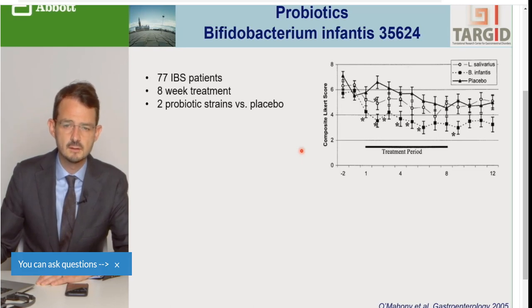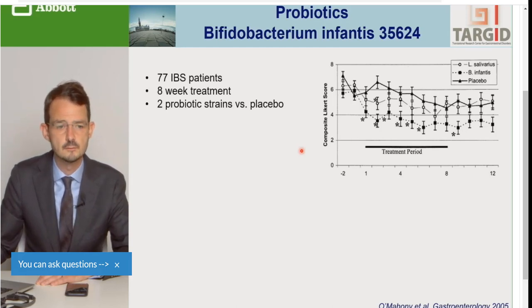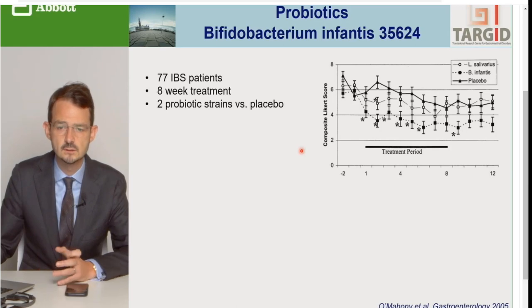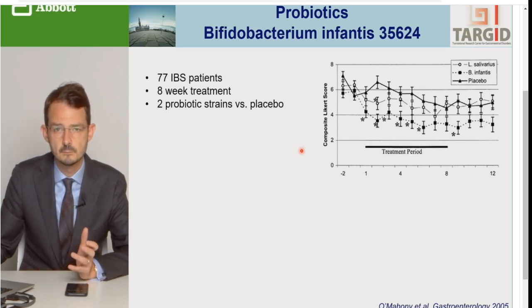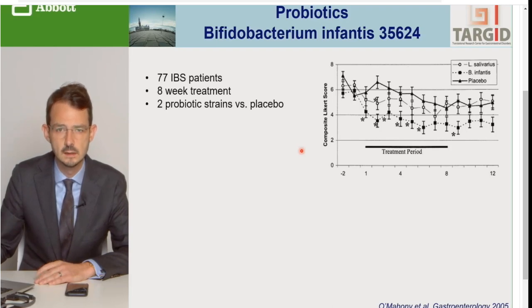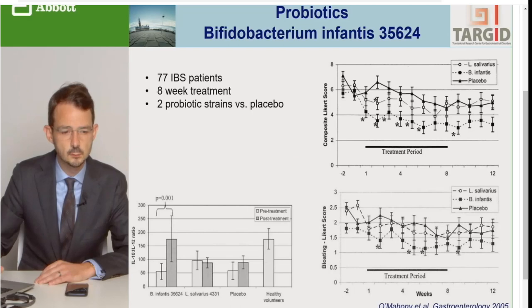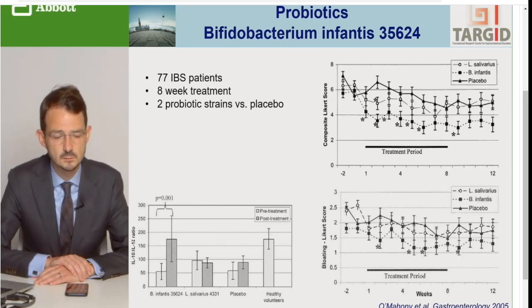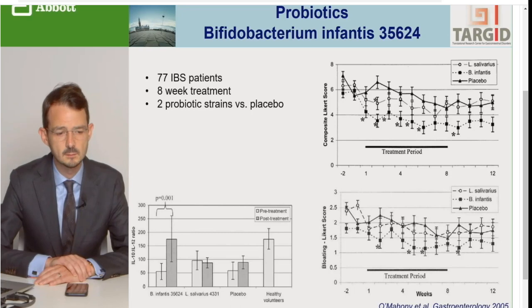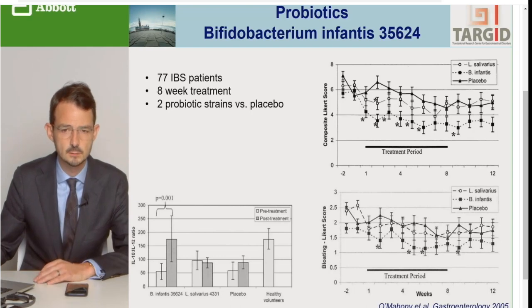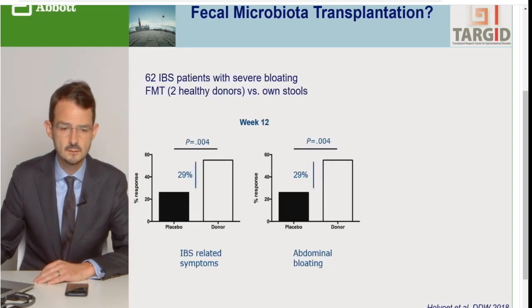Bây giờ chúng ta xem từng loài probiotics - đây là Bifidobacterium infantis 35624. Nó được so sánh với Lactobacillus trong khoảng thời gian điều trị 8 tuần. Người ta muốn tìm hiểu xem triệu chứng có giảm xuống không so sánh với giả dược và so sánh với Lactobacillus. Trong thử nghiệm này thì người ta thấy có tình trạng chướng bụng giảm hơn. Tỷ lệ giữa Interleukin-10 và Interleukin-12 là có sự thay đổi khi sử dụng Bifidobacterium, do đó nó sử dụng cơ chế chống viêm.